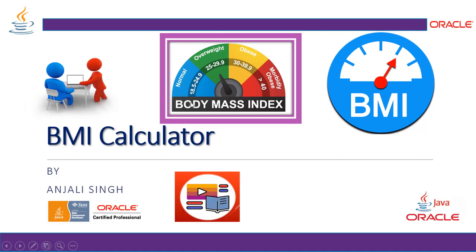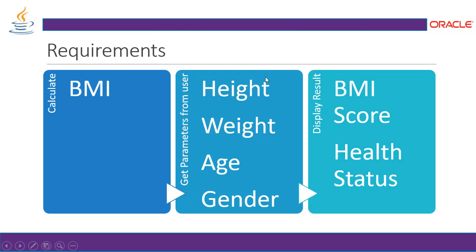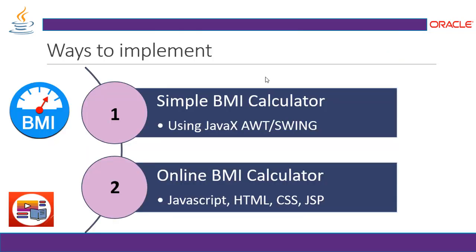As you can see, this is the Body Mass Index Scale. If it is between 18 to 25, it will be normal, and so on. There are two ways we are going to present it here: one is a simple BMI calculator using Java AWT Swing, and another is an online BMI calculator using JavaScript, HTML, CSS and JSP.